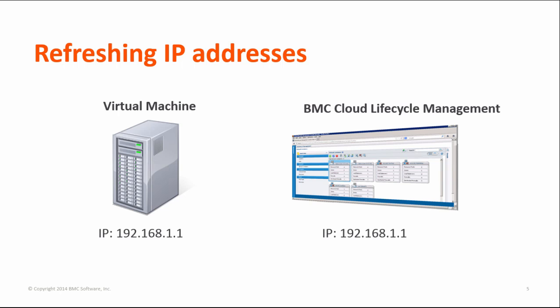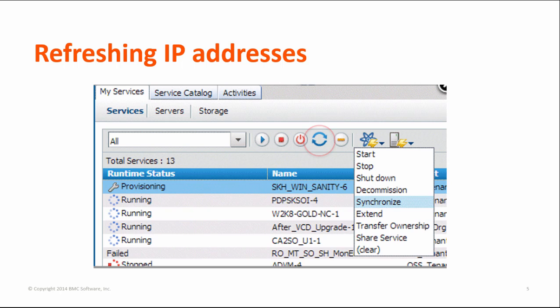In earlier releases of BMC Cloud Lifecycle Management, if the IP address of a virtual machine changed, the IP address in BMC Cloud Lifecycle Management remained unchanged. In version 4.1, if the IP address of a VM changes — for example if the IP renewal or DHCP lease expires — the change is reflected when you synchronize or refresh the service offering instance under the Services or Servers tab under My Services.